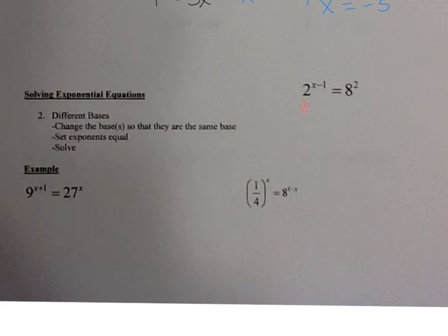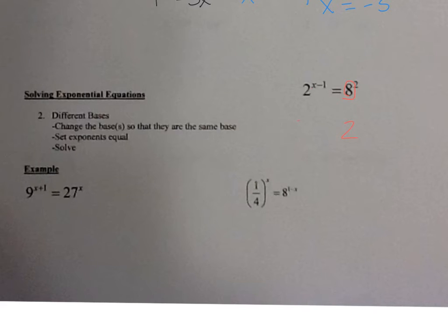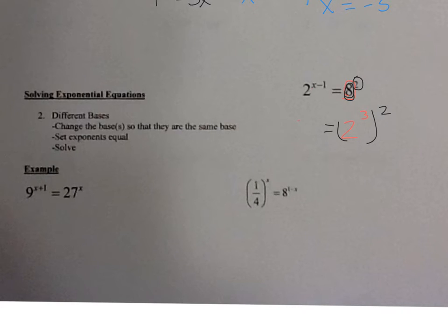For example, you cannot take 2 and write it as 2 to the 3rd power. Yes, 2 to the 3rd is 8, but this base still has to be the number 2 — you'd be changing 2 to an 8, and you can't do that. What you need to do is find another way to represent 8. Another way to write 8 with a base of 2 is 2 to the 3rd. I didn't change the number — I just changed what it looked like. Now raise that to the 2nd power, keeping the left side as 2 to the x minus 1. Power to a power means you multiply: 2 to the x minus 1 equals 2 to the 6th power.